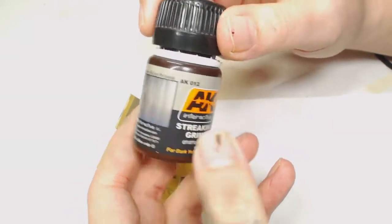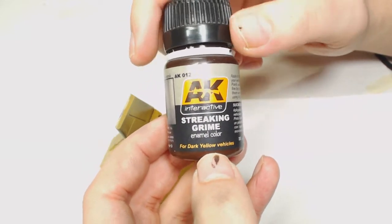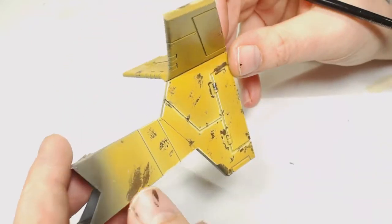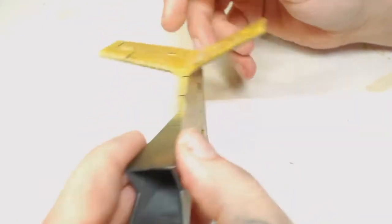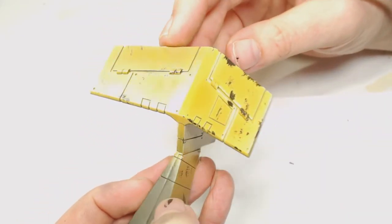We have used it in a few tutorials, but now we're just going to focus on the streaking grime itself. The first thing you're going to want to do before adding streaking grime to any one of your models is apply a varnish to protect it.